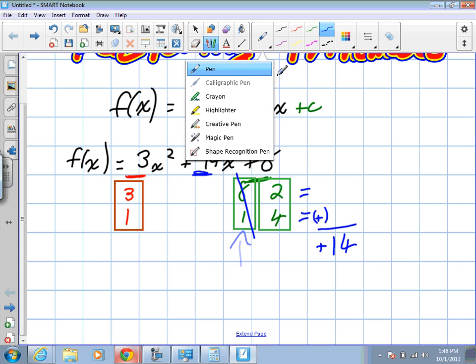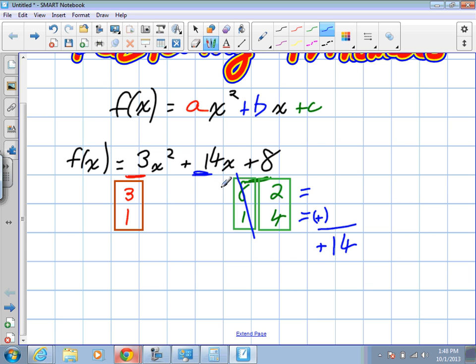What does work, Neil? 3 times 4 and 1 times 2. 1 times 2 gives us 2. 3 times 4 gives us 12. Perfect. And when we add them together, we get 14. Excellent.